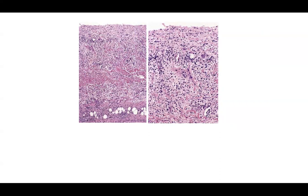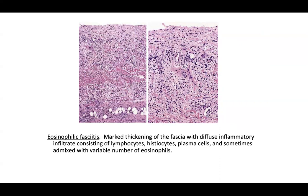You'll probably need a clinical history. If someone presents with cord-like indurated plaques on the bilateral arms, deep in the level of the fascial plane, consider eosinophilic fasciitis. You don't need a ton of eosinophils — that's a common misunderstanding. What you really want is thickening of the fascia. Biopsies should be deep wedge-shaped, looking for diffuse mixed inflammatory cells: lymphocytes, histiocytes, plasma cells, and some eosinophils.